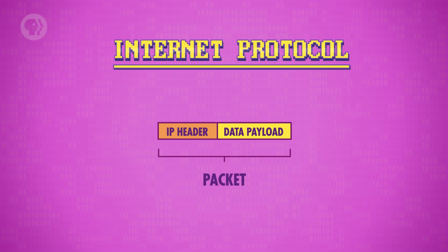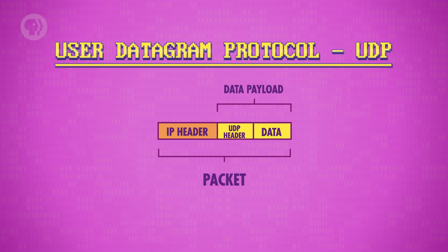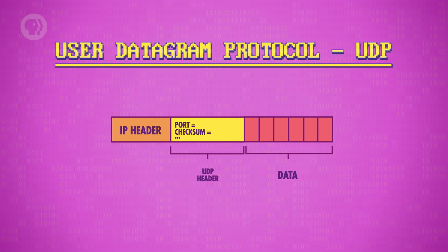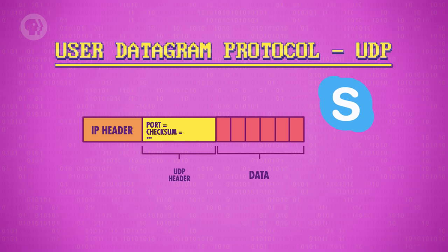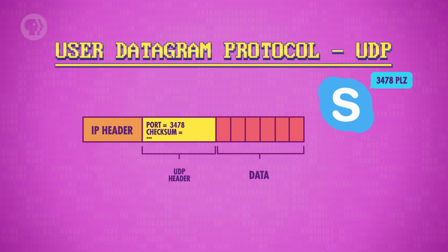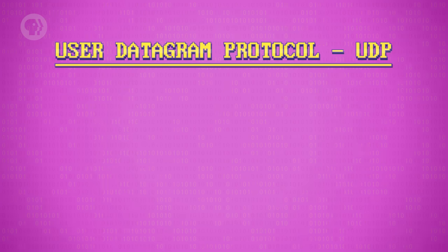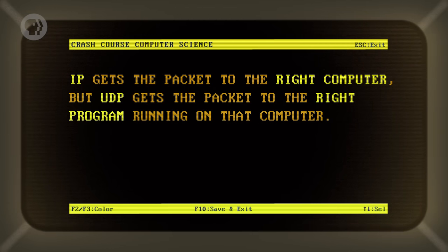One of the simplest and most common is the User Datagram Protocol, or UDP. UDP has its own header, which sits inside the data payload, and contains some useful extra information. One of them is a port number. Every program wanting to access the Internet will ask its host computer's operating system to be given a unique port — like Skype might ask for port number 3478. When a packet arrives at the computer, the operating system will look inside the UDP header and read the port number, then give the packet to the corresponding program. So to review: IP gets the packet to the right computer, but UDP gets the packet to the right program running on that computer.